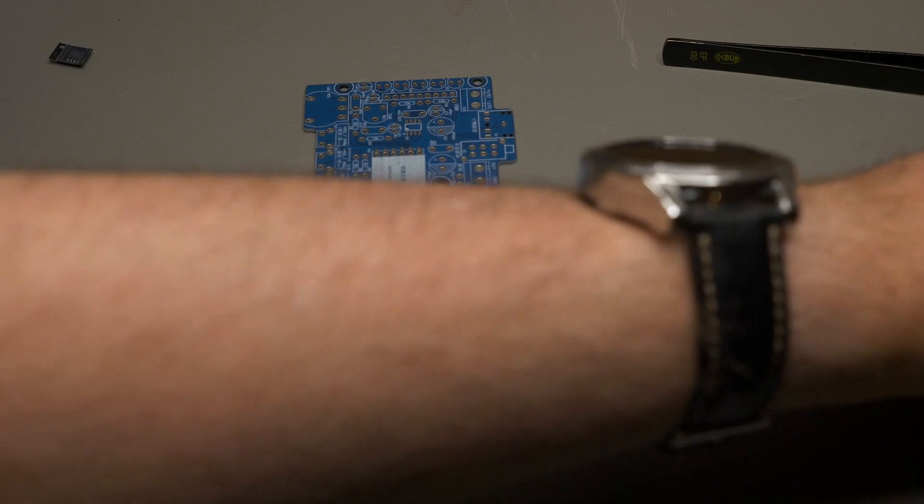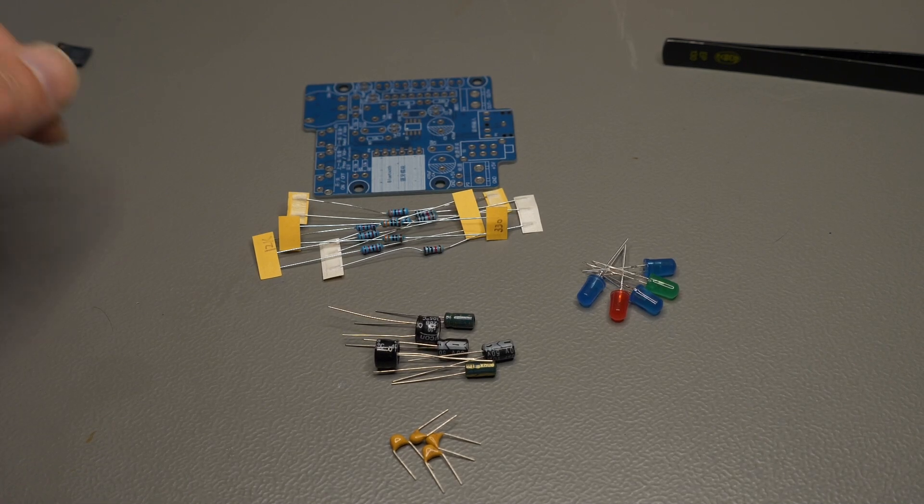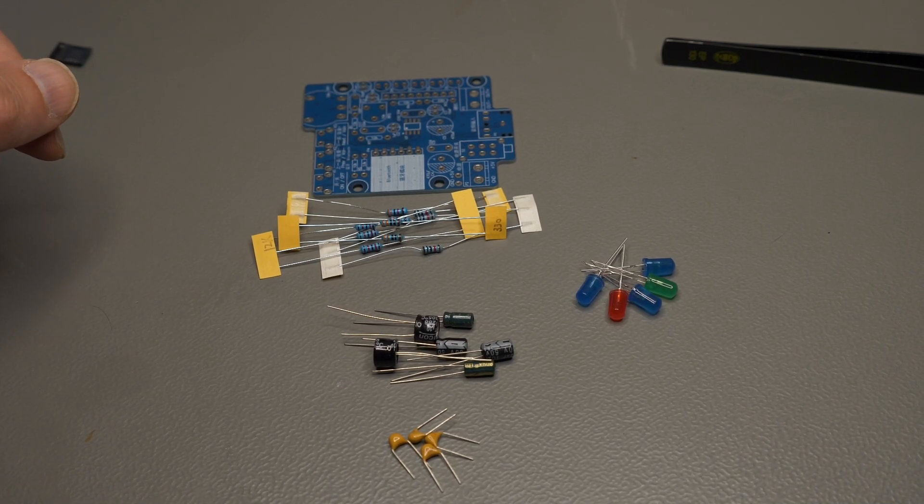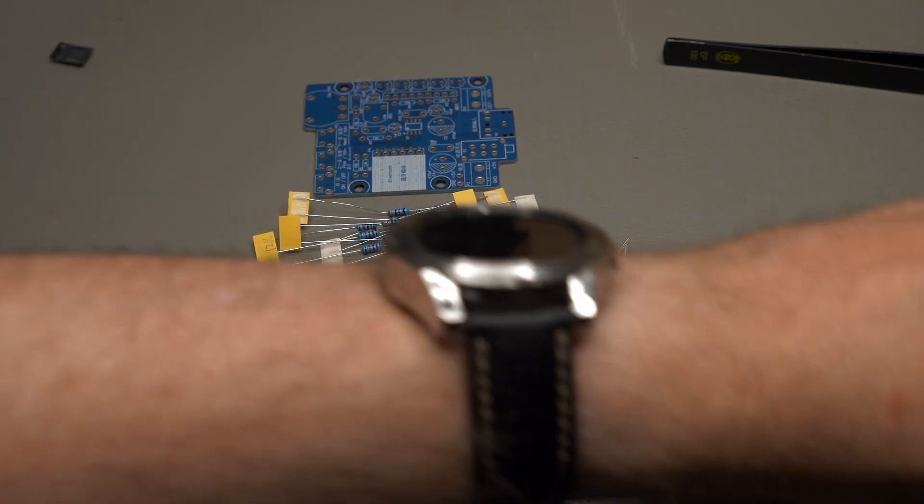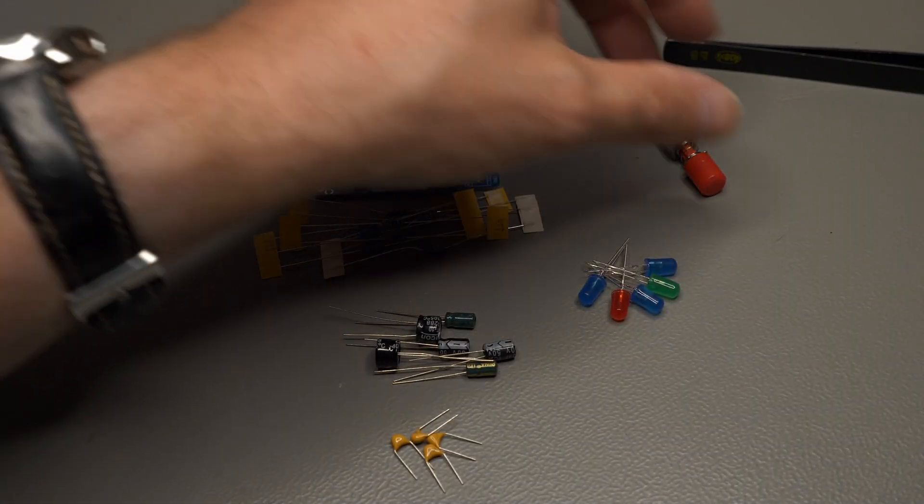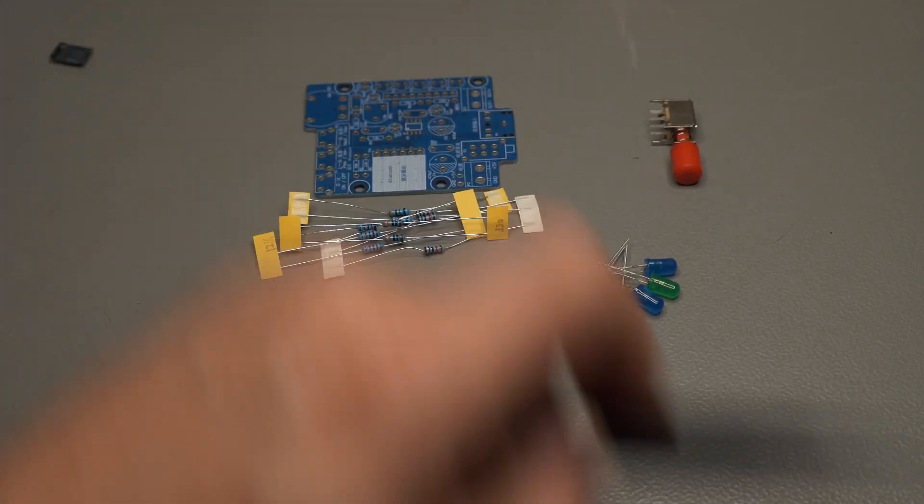Okay, then we have obviously the LEDs for this VU meter. So three blue ones, a green one and a red one. Then this is the power switch with a button with a plastic cap. I've already put that on.